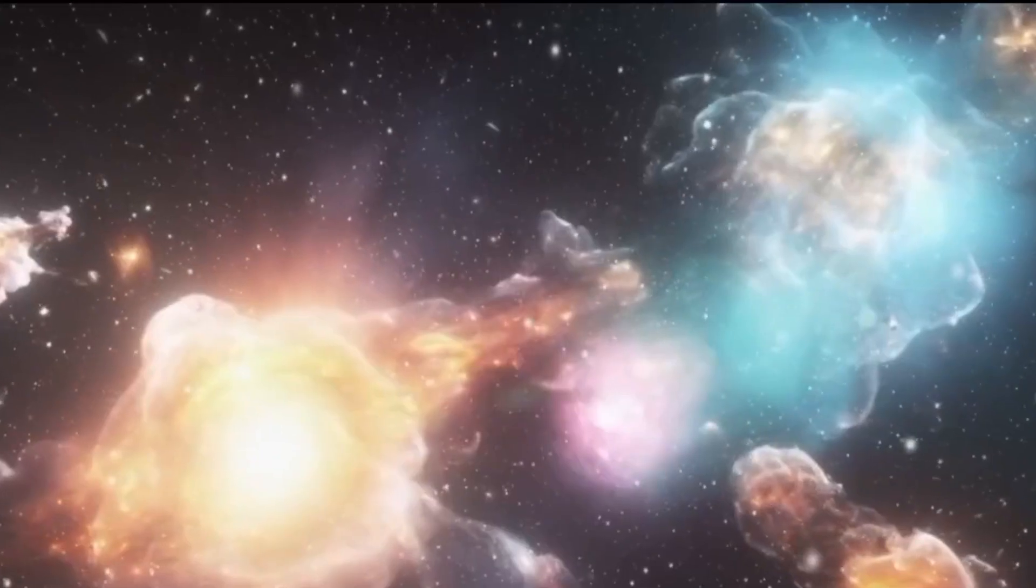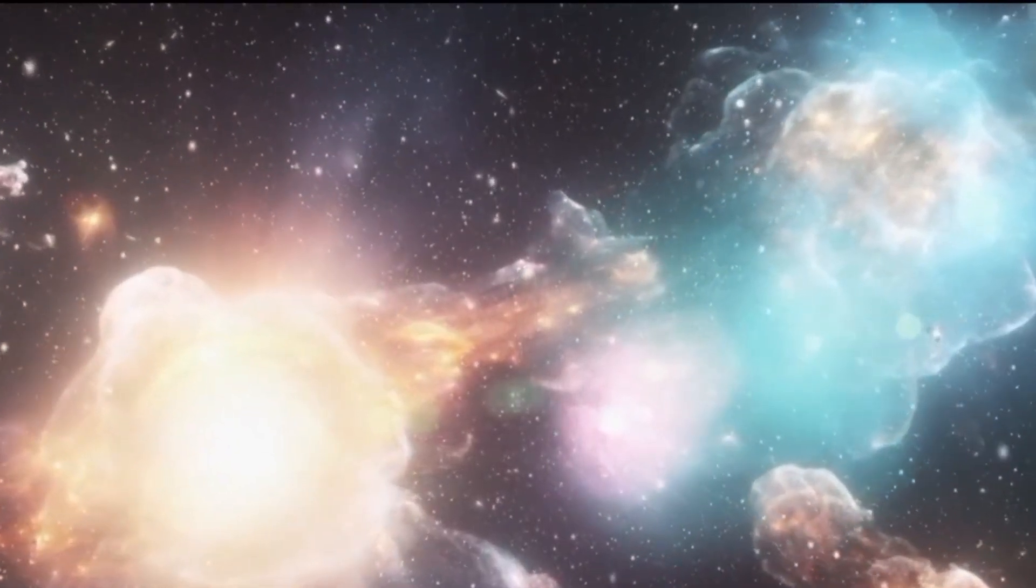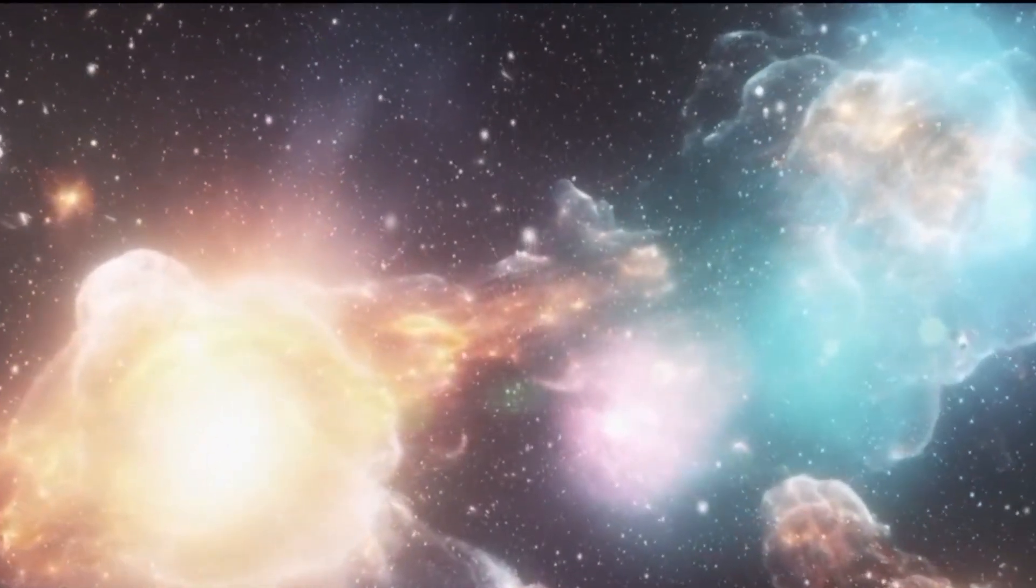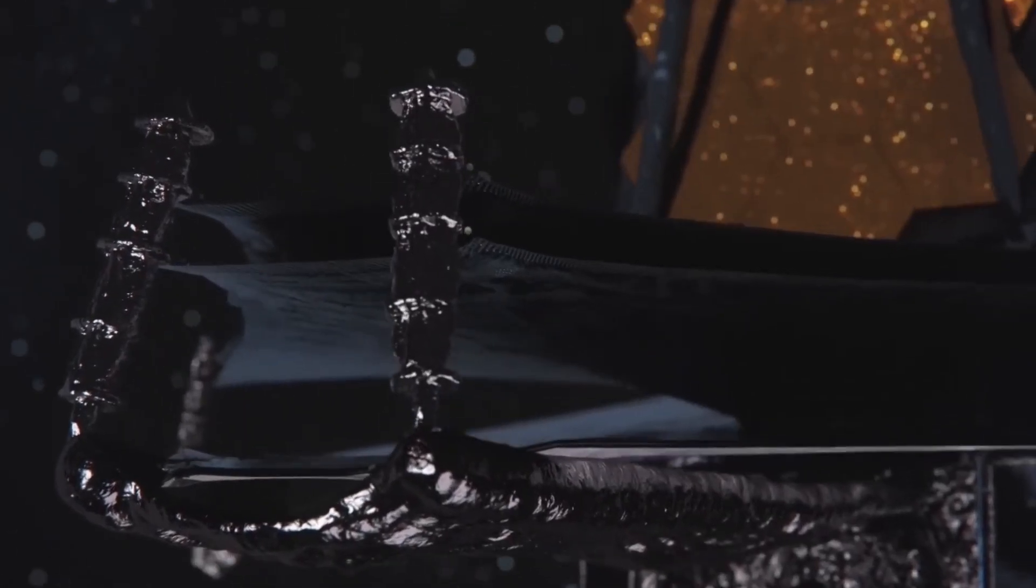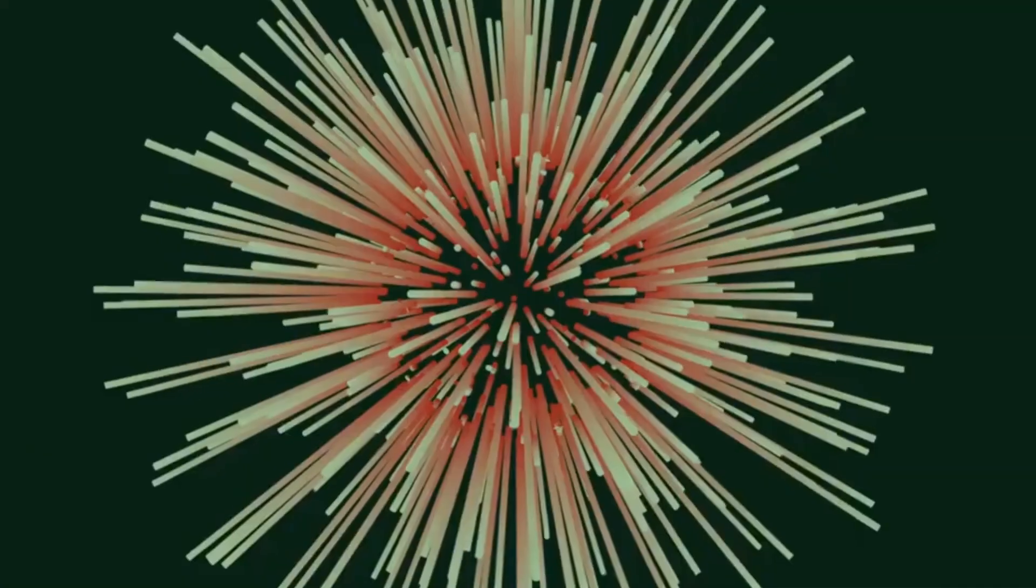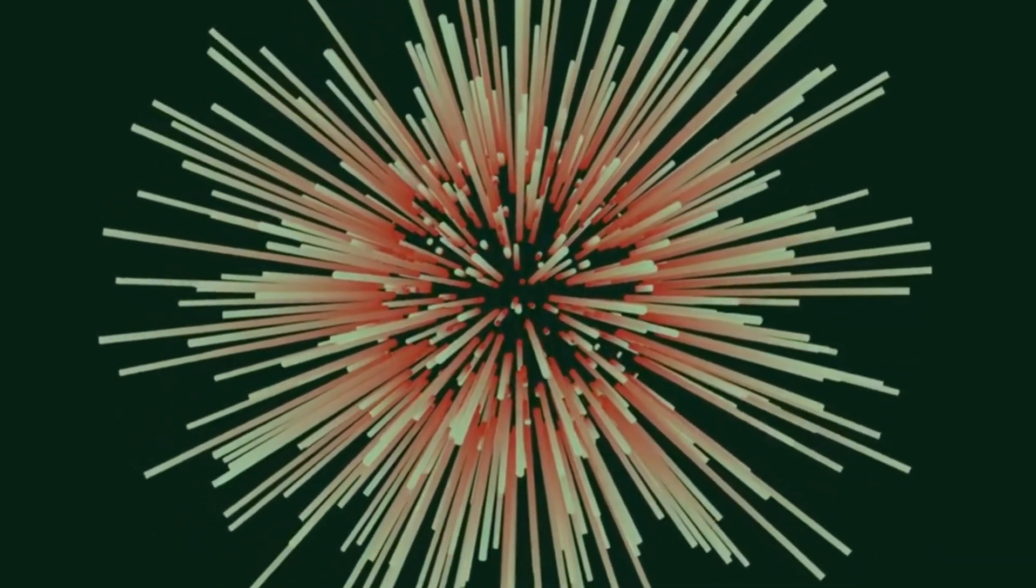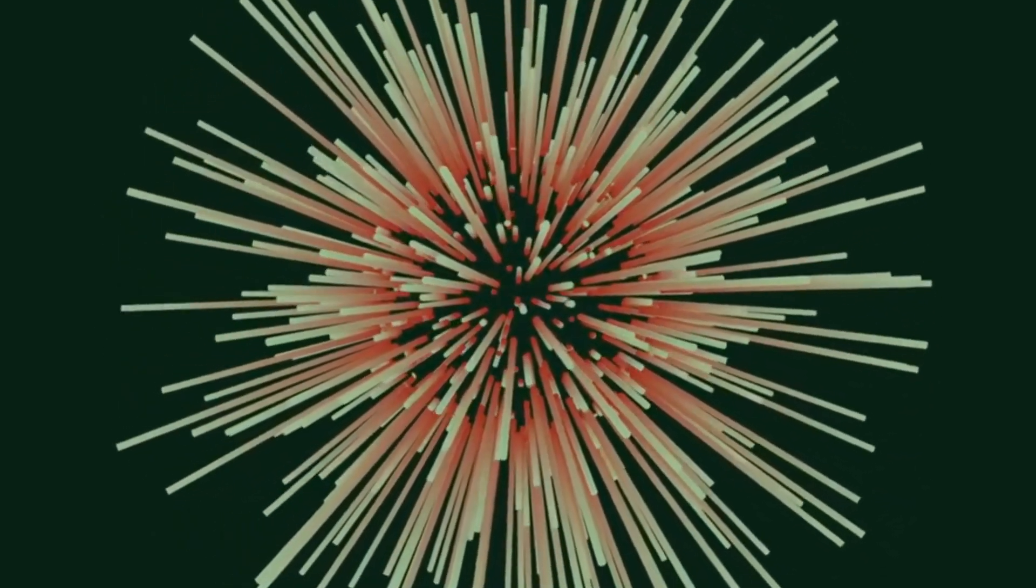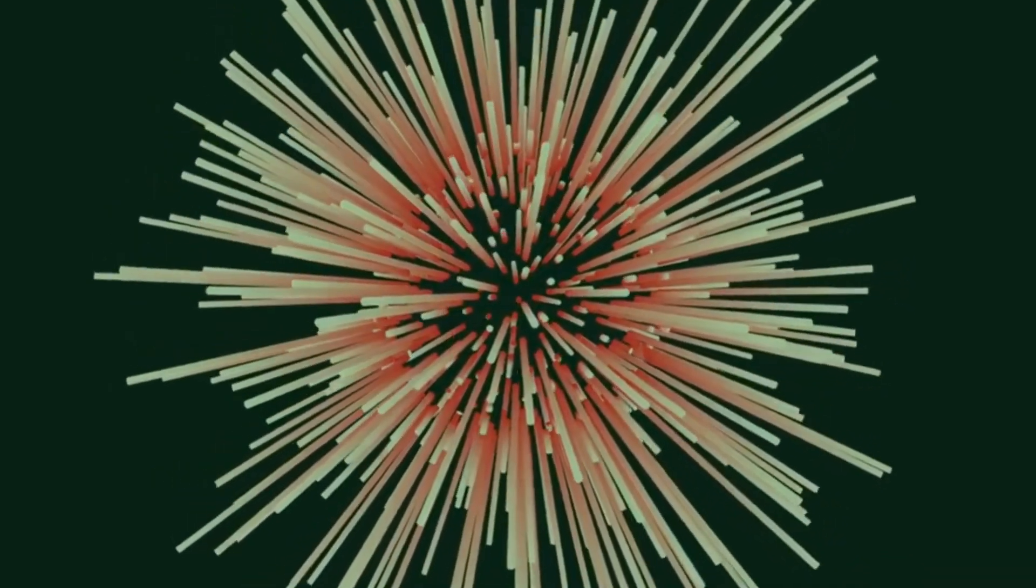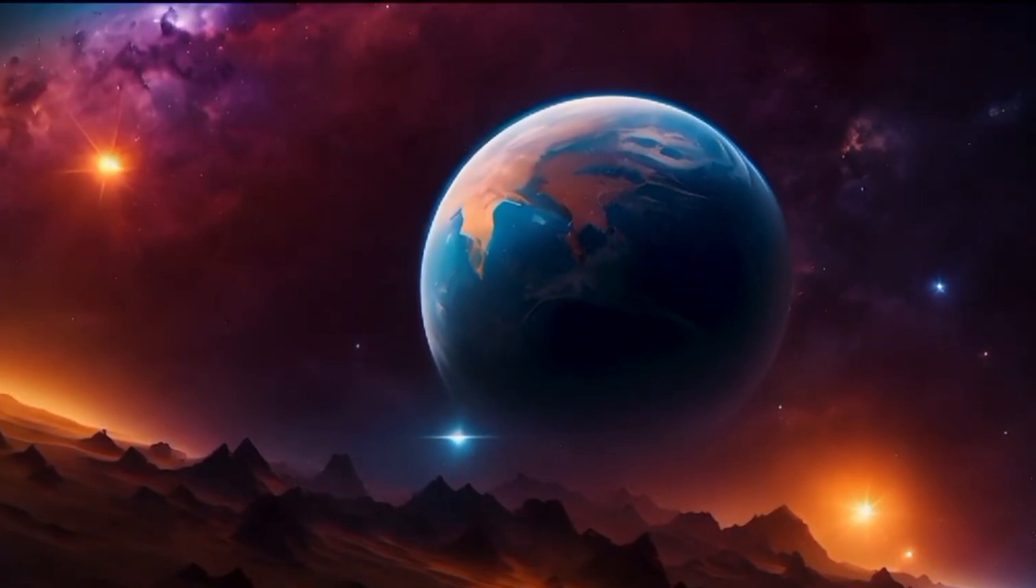Beyond the immediate vicinity of the explosion, the supernova would spew out a torrent of cosmic rays, high-energy particles traveling near the speed of light. These particles, primarily protons and atomic nuclei, would spread out in all directions, with some eventually reaching our solar system. While Earth's magnetic field and atmosphere would shield us from the direct impact of these particles, they could influence the solar wind, a stream of charged particles emitted by the sun. This interaction could lead to enhanced auroras, the mesmerizing light displays seen near the poles, making them visible at lower latitudes than usual.